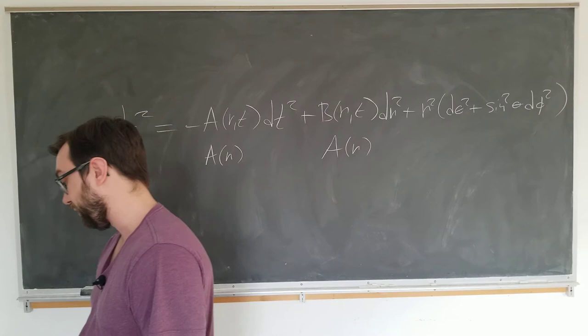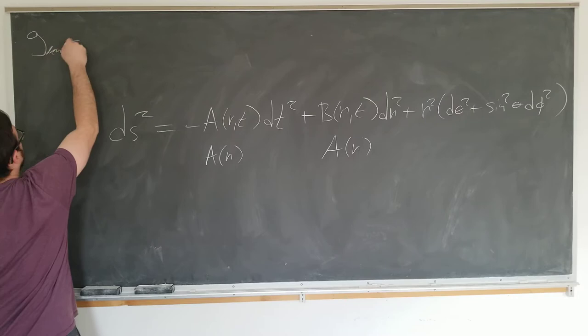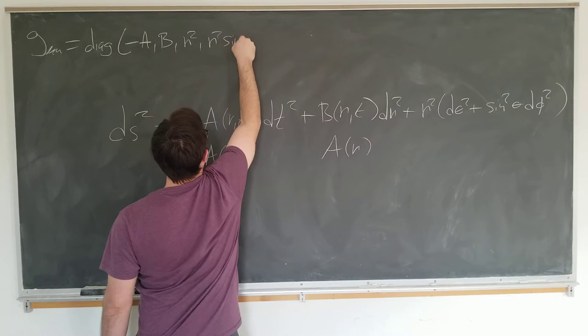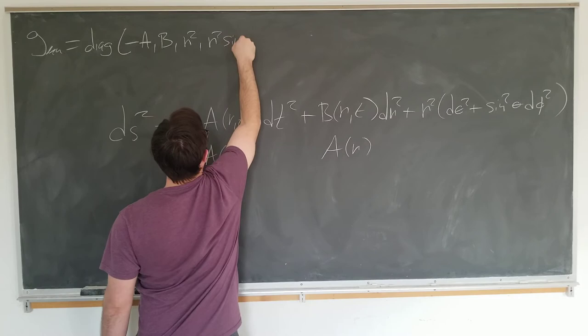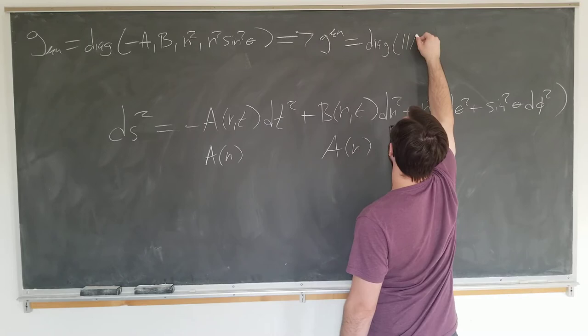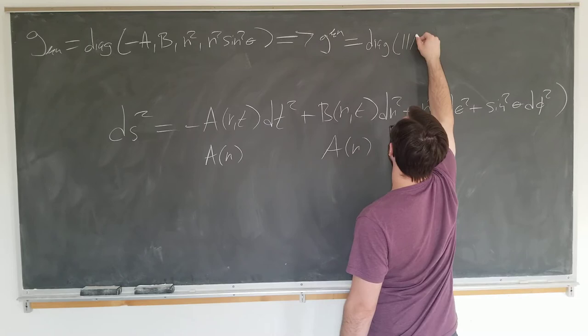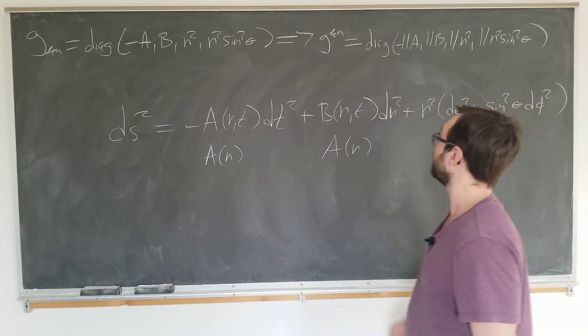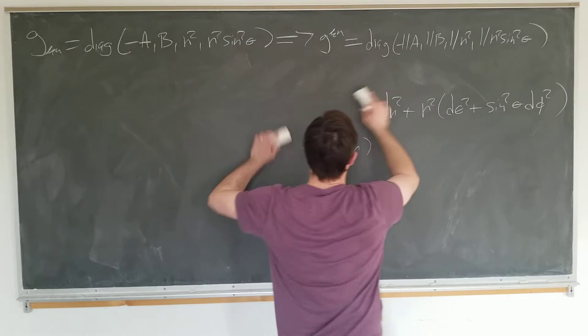So the form of this metric that we need in this lecture is going to be a bit more unwieldy, but it is useful. We're using G mu nu as a diagonal matrix. It's the diagonal matrix of minus a, b, r squared, and r squared sine squared theta, which of course immediately tells us that the inverse metric G mu nu is a diagonal matrix of minus 1 over a, 1 over b, 1 over r squared, and 1 over r squared sine squared theta. Now we don't need the long form of the metric anymore since we have all the information here.